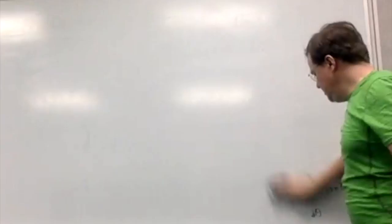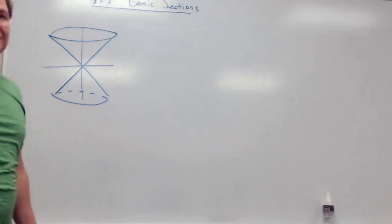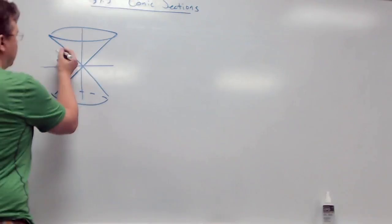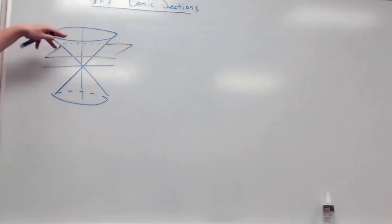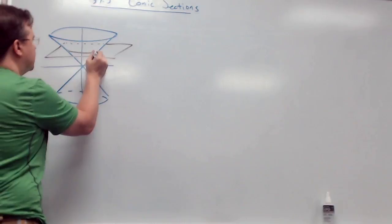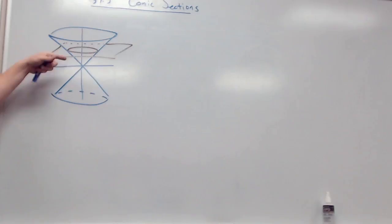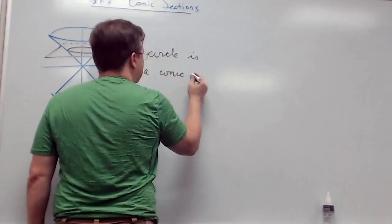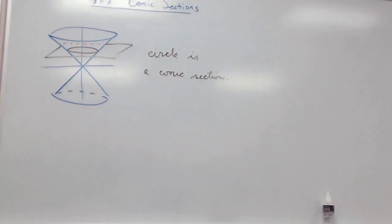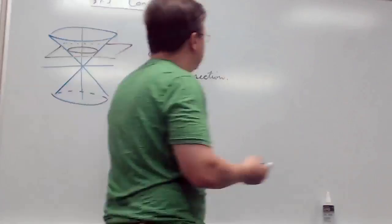One line is enough — just revolve y equals x around the y-axis to get the cone. A conic section is a section of the cone. You can cut it anywhere — horizontally or really anywhere. For example, imagine a plane hovering above the tip of the cone. The intersection between the plane and the cone is a circle. So a circle is a type of conic section.